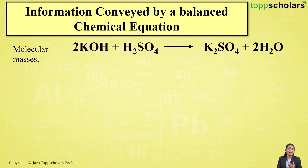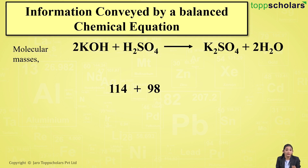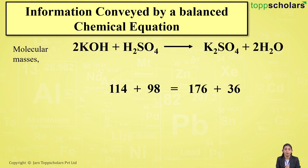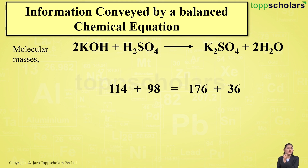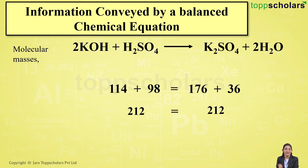So we can easily calculate the molecular masses of the reactants as well as the products from the chemical equation. The molecular mass of potassium hydroxide was 114 and that of sulfuric acid was 98. On the product side, potassium sulfate was 176 and water was 36. If you add up the masses of the reactants and products separately, the mass of the reactants is 212 and the mass of the products is also 212.